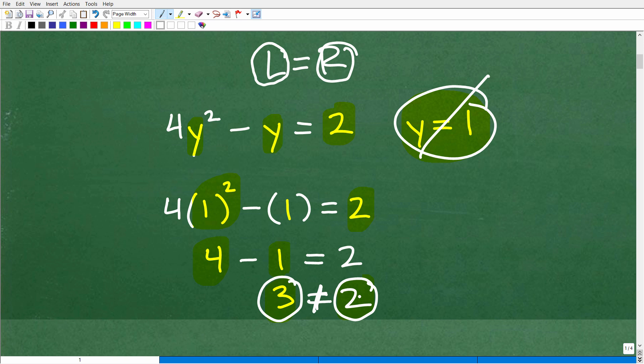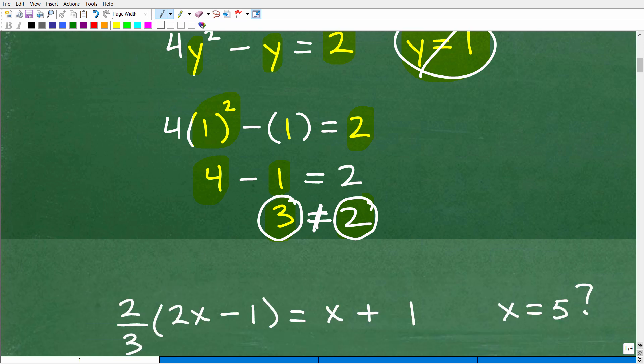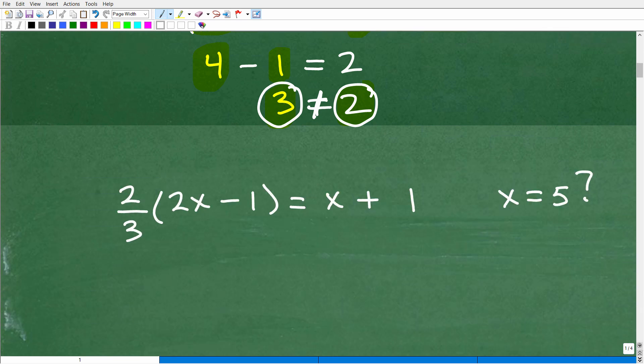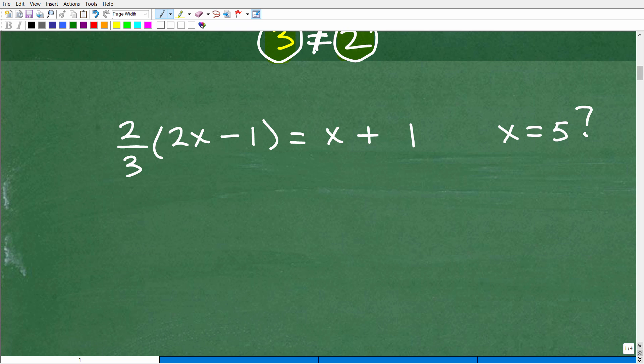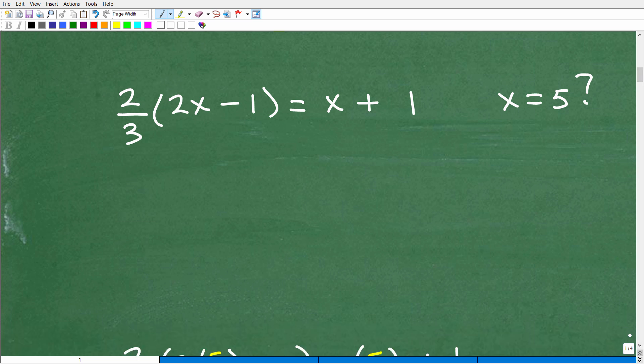So y equals 1 is not a solution because 3 is not equal to 2. That's basically the whole procedure here. Okay? So if you understand this, and you're like, okay, I could do this. Well, this is very, very important. But here is where a lot of students kind of mess up. They don't know the math, the simple arithmetic to actually check the work.